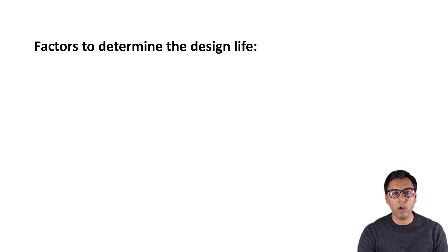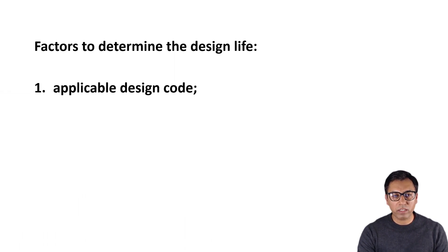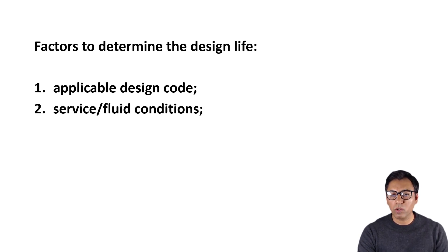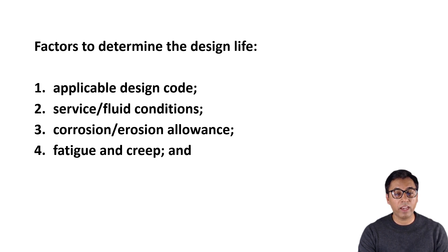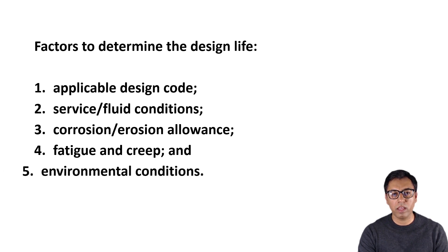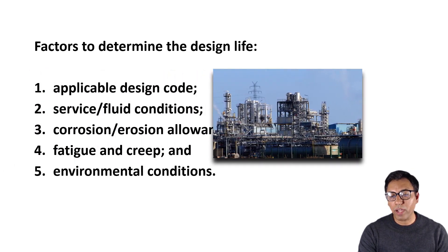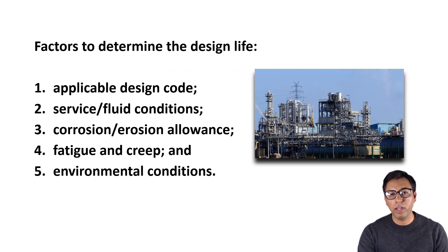The following factors can be used to determine the design life of any piping and pipeline system. These factors are: number one, applicable design code; number two, service or fluid conditions; number three, corrosion or erosion allowance; number four, fatigue and creep; and number five, environmental conditions. These five factors are normally the basis for design life of piping and pipeline systems.